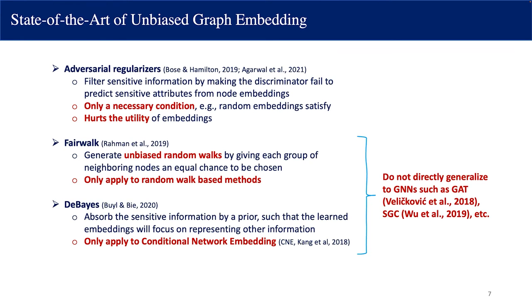There are also other methods. For example, FairWalk tries to generate unbiased random walks by giving each group of neighbor nodes an equal chance to be chosen. However, FairWalk only applies to random walk-based methods. Another work called DeBase is based on the conditional network embedding method; it tries to absorb sensitive information by assigning a prior so that the learned embeddings focus on representing other information. However, both FairWalk and DeBase cannot be directly generalized to graph neural networks such as GAT or SGC.